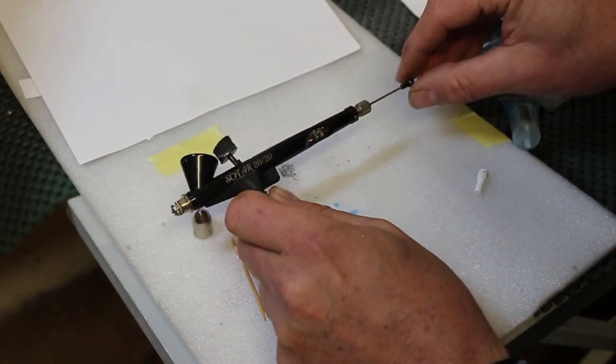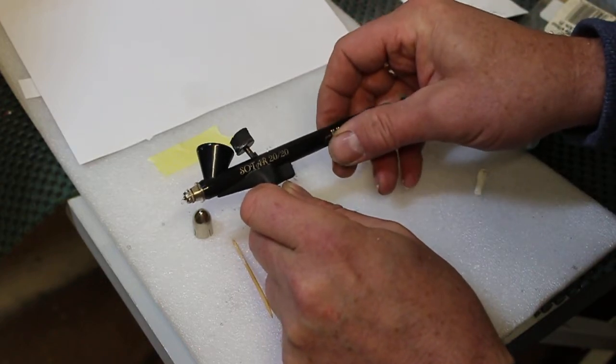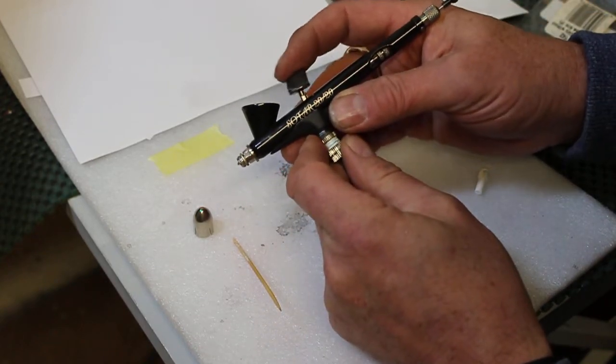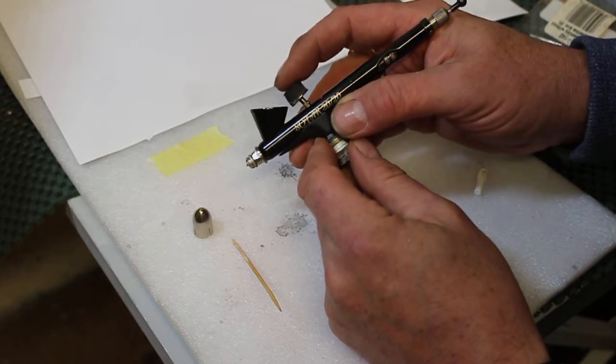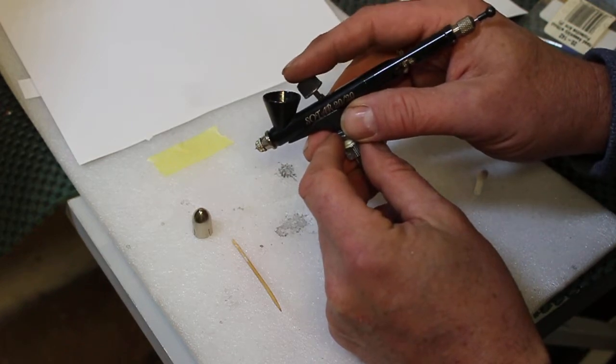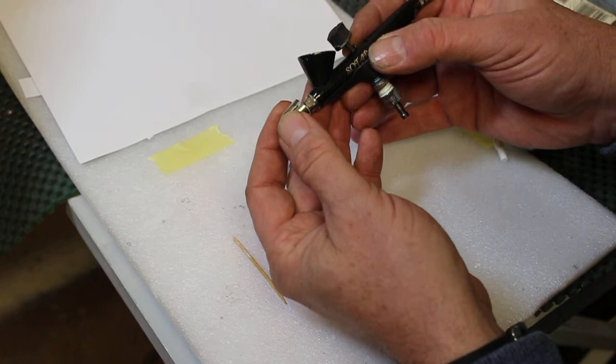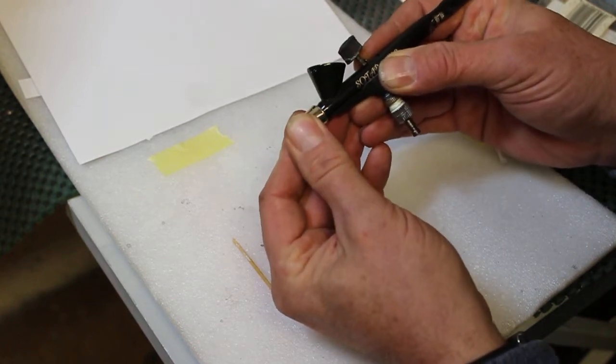And then we can undo the chuck, put the needle back in, fasten the chuck back up, and that's now our airbrush. It has the spongy top on the trigger and makes it a little bit taller and easy. I find it a lot easier to use that way. We looked at that in a different review. We can put the cap back on.